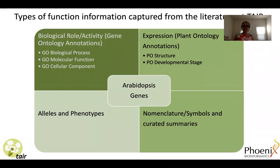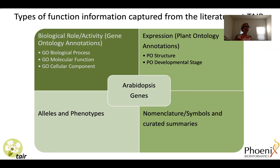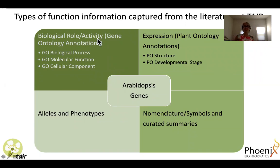When I say that TAIR focuses on capturing gene function information for Arabidopsis thaliana, I want to go over the types of functional information that we obtain. Our goal is to capture experimental data from the literature and codify it to make it computationally accessible. Each week we import papers from PubMed with Arabidopsis in the title or abstract and extract relevant information from those experiments. These are low-throughput but high-quality data, and the type of information we capture includes the biological role or activity of genes, captured in the form of gene ontology annotations.